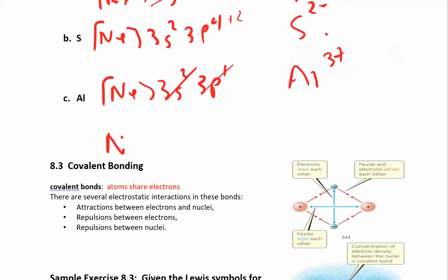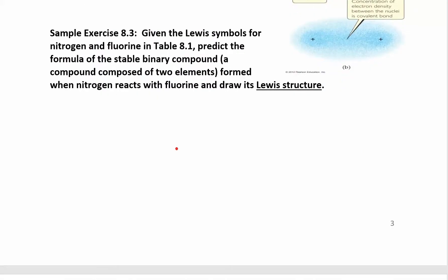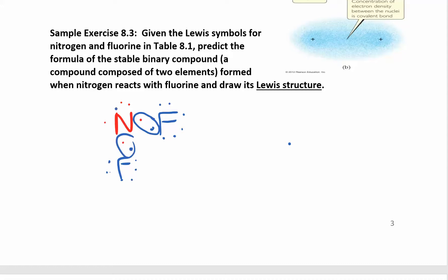Looking at the octet rule: nitrogen has one, two, three, four, five electrons. To get to eight electrons, nitrogen needs to share some with fluorine. Fluorine has seven valence electrons — one, two, three, four, five, six, seven. If fluorine gets really close, they'll each be able to share one electron. Now fluorine has eight electrons around it, and nitrogen sees another electron. If nitrogen does this with two more fluorines, there's a bond there.